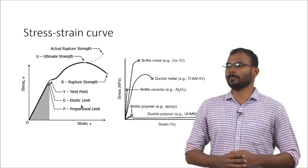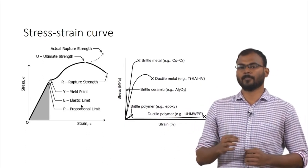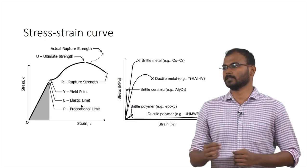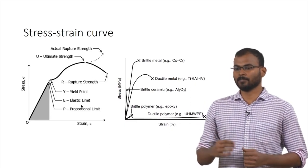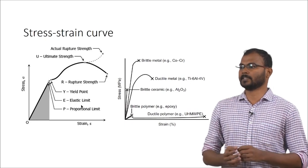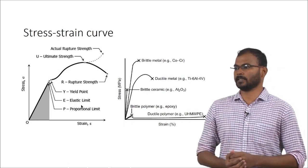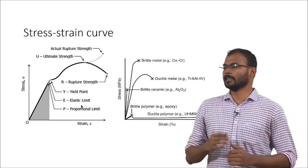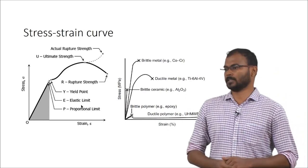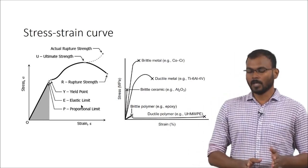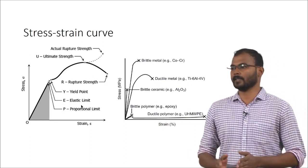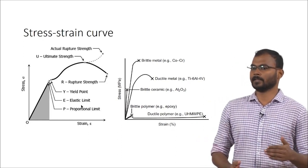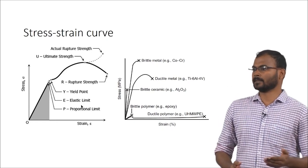The ultimate strength is the maximum load that material can withstand. Considering a hip prosthesis — the maximum load that the material can withstand, even if it deforms, is the ultimate strength. After that, if you continue to apply load, the material will break — that is called rupture strength. This is a typical stress-strain curve, but for different types of biomaterials it varies, because polymers will have higher elasticity whereas ceramics have no elasticity at all.